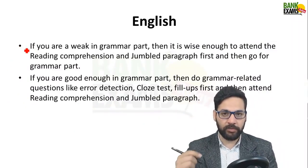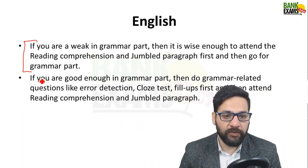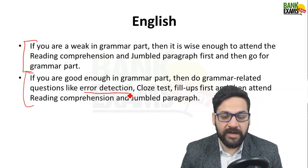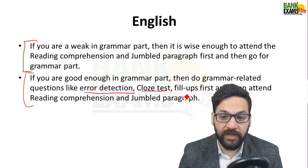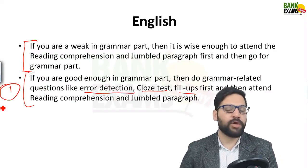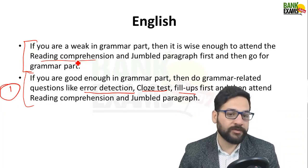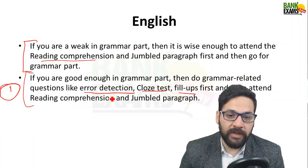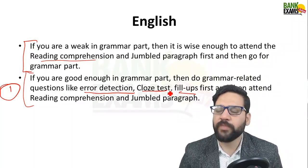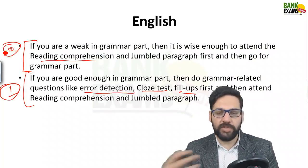In English, divide into round one and round two. If you are good at grammar, then grammar-based questions like error detection, cloze test, and fill-ups are your round one, and comprehension and jumbled paragraphs are round two. If you are not good at grammar, then comprehension and jumbled paragraphs become your round one. That's how you need to attempt the paper.